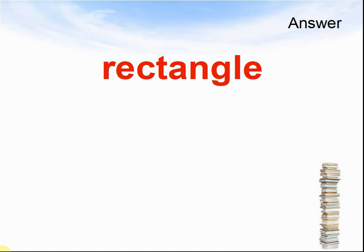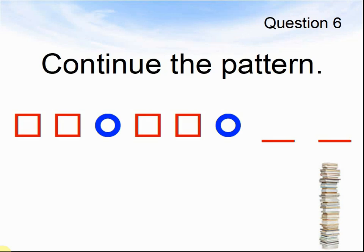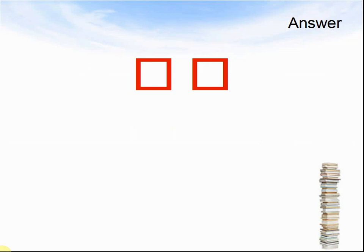Let's look at the next question. Are you ready? Question 6. Continue the pattern. Square, square, circle, square, square, circle, something, something. Pause the video and let the children draw the next two shapes. What could it be? Here come the answers. The answers are two squares.